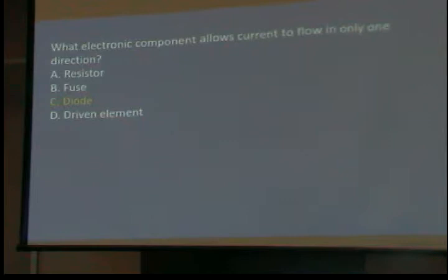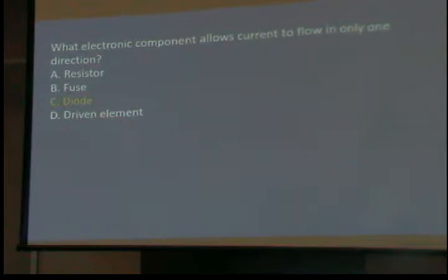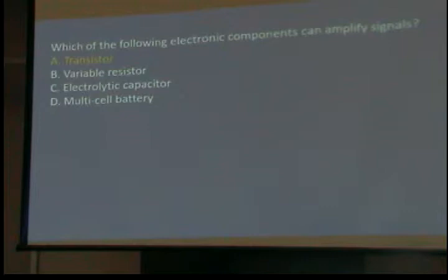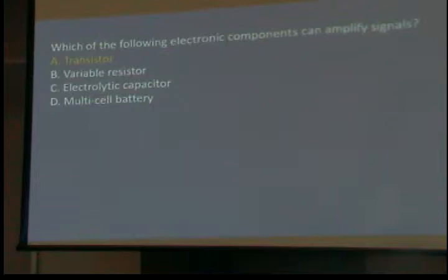Which component can be used as an electronic switch or amplifier? A transistor — you have a small current that changes a bigger one, and that's called amplification. Which component can consist of three layers of semiconductor material? A transistor — it has three leads that hit three layers of material. Current flows through and is altered by the middle layer. Which components can amplify signals? A transistor. You'll almost certainly get at least one of these questions.